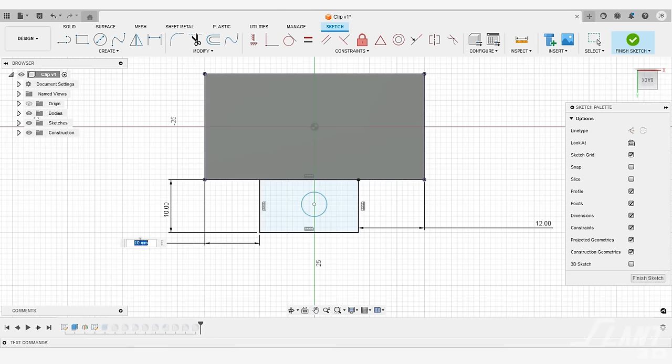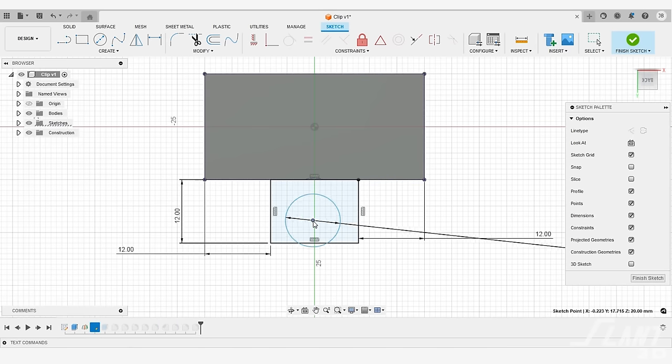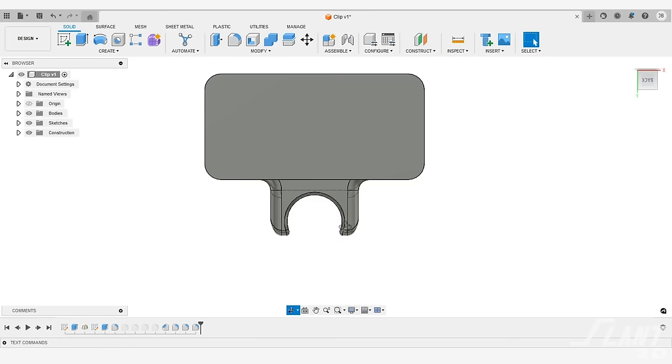But this doesn't just apply to tabs with little holes in them. This can also apply to clips and clamps and that kind of stuff. If you have a part that clips onto something, a lot of people will design a clip like this, where it's just sticking out into thin air. But that's not what you want to do, especially if you're making a clip.